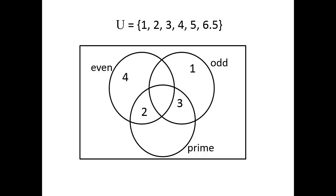5 is not even, it is odd, and it is prime, so it's outside the even circle, inside the odd circle, and inside the prime circle. 6.5 is not even, it's not odd, and it's not prime, so it can't be inside any of the circles. But it's still part of the universal set — anything inside the rectangle is in the universal set — so 6.5 would have to be outside of all three circles.